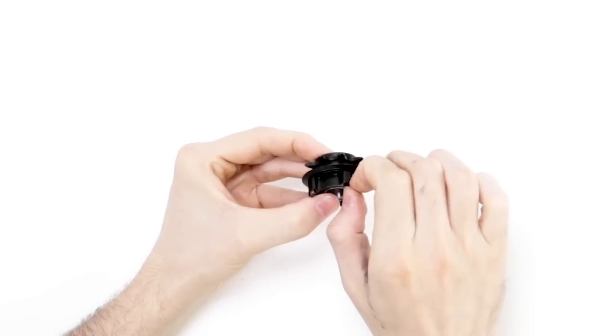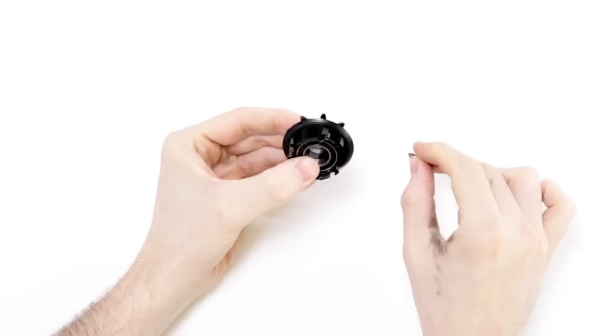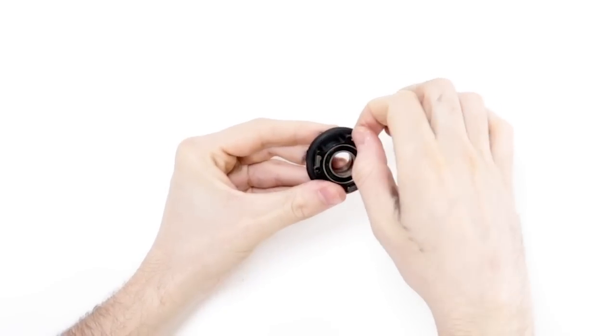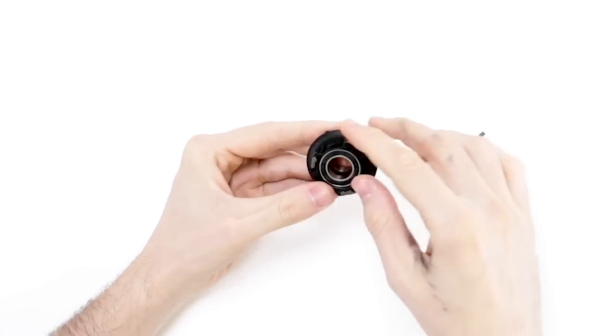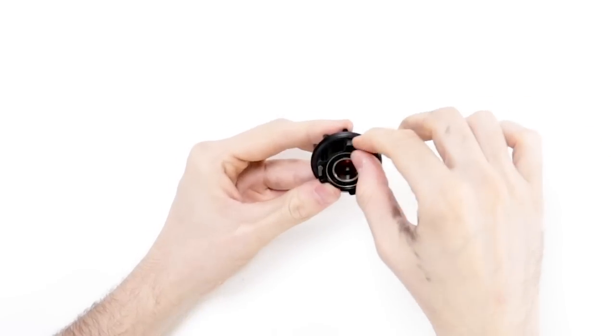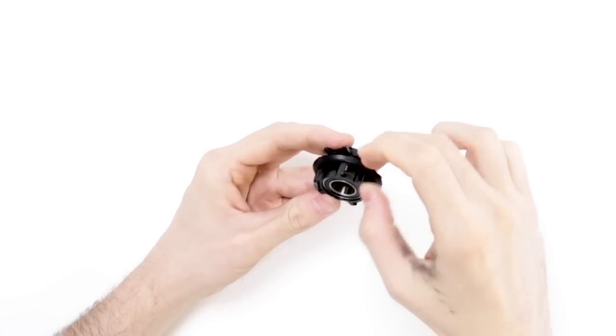You're now going to want to take the driver and you're going to individually one by one take out each of the three pools and the small free coaster springs which hold the pools down. Once you've removed the pools and springs take the small free coaster springs and put them in a safe place.